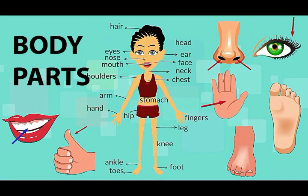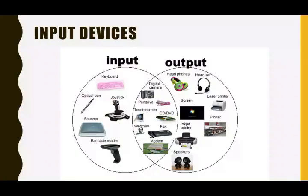Based on their function, the parts of a computer are divided into two types: input devices and output devices.